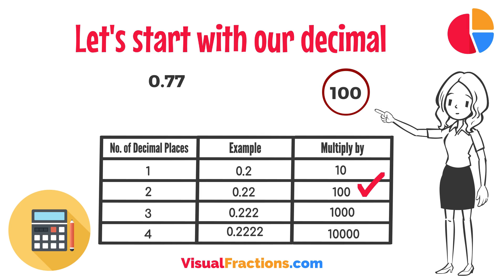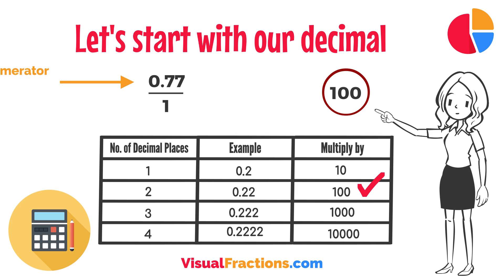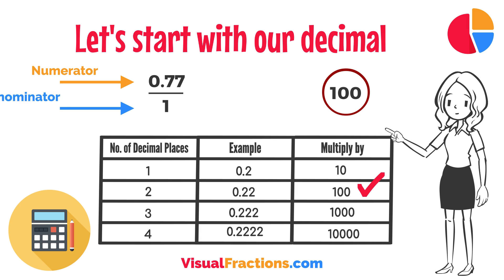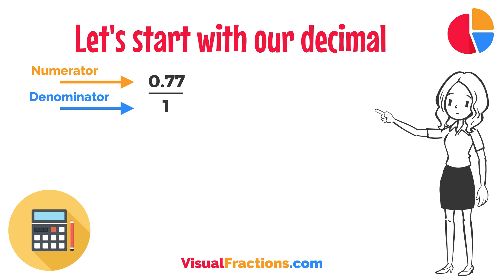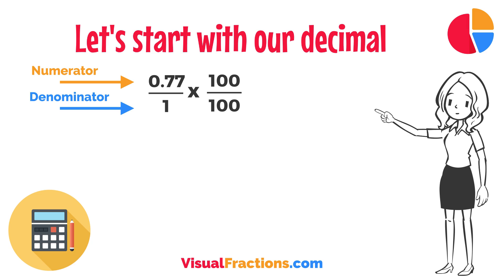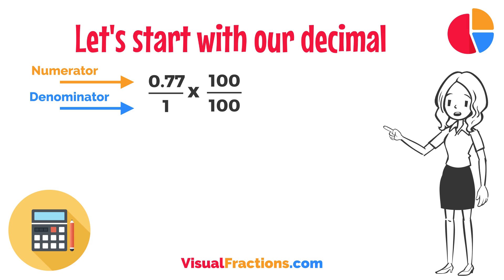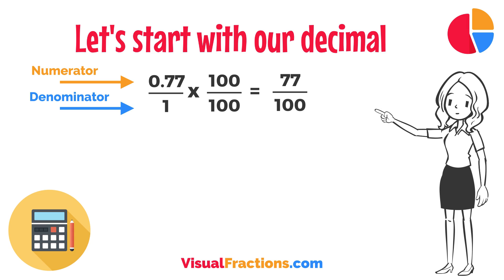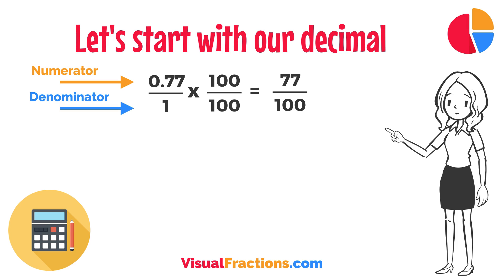To convert this decimal into a fraction, you initially put it over 1, essentially treating the decimal as the numerator in a fraction where the denominator is 1. This sets up the conversion process where we multiply both the numerator, the decimal, and the denominator, 1, by 100 because there are two decimal places. So, 0.77 times 100 gives us 77, and 1 times 100 gives us 100. This translates 0.77 to the fraction 77 over 100.